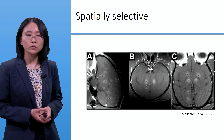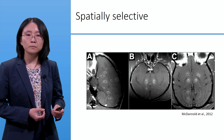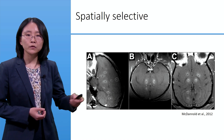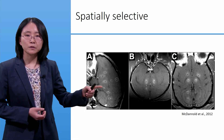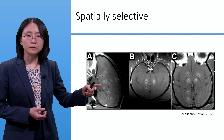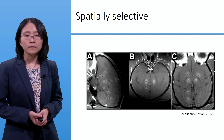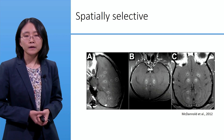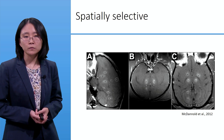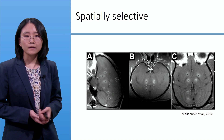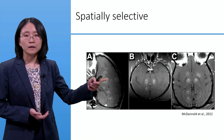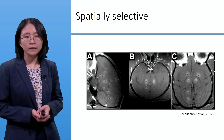The study showed that we can open the blood-brain barrier in both superficial targets as well as deeper targets. This is demonstrated by the extravasation of gadolinium, which otherwise does not cross the intact blood-brain barrier, and it shows up as a hyperintensity on MRI.